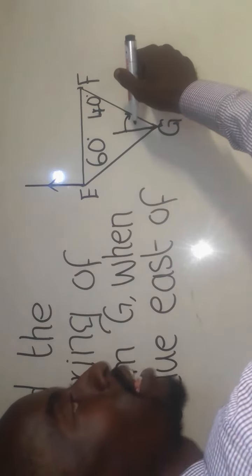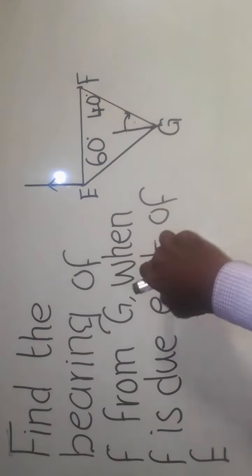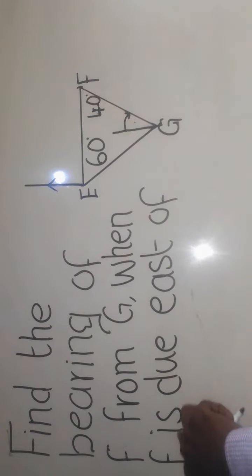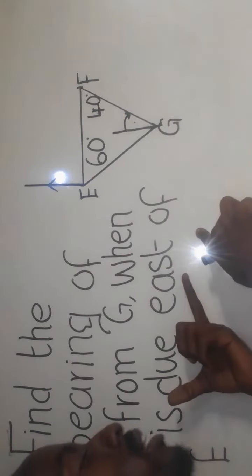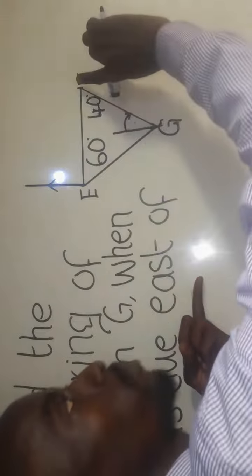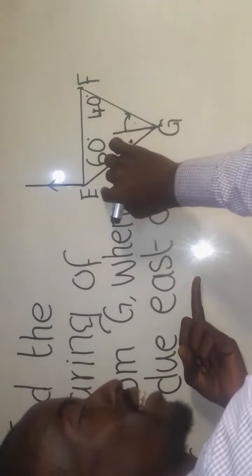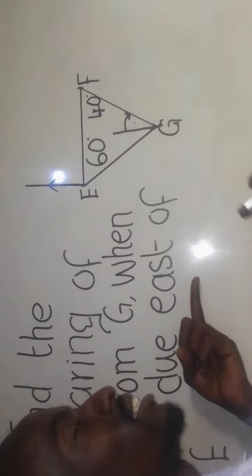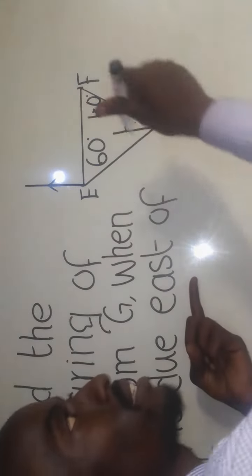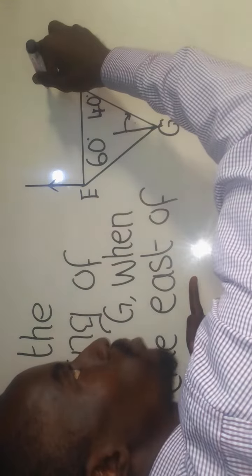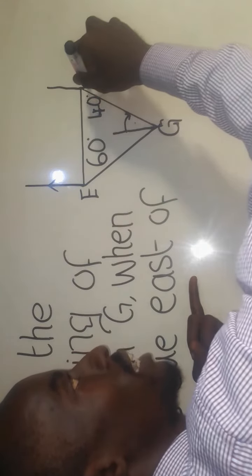Now you need to understand that here I have said when F is due east. Due east simply means at the point F here going to the east side, there is 90 degrees. Due east simply means 90. So here at this point F you draw a line going north there, and then here it means there is 90 there.